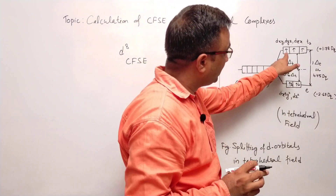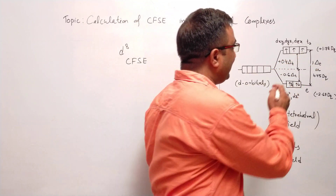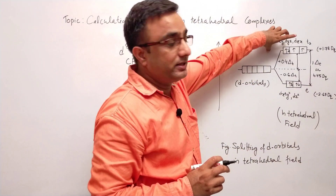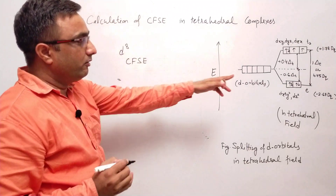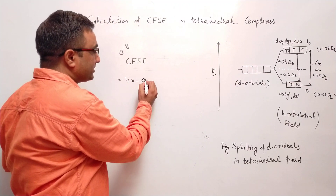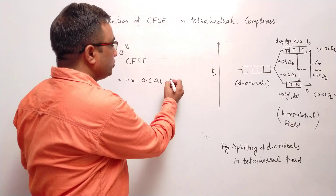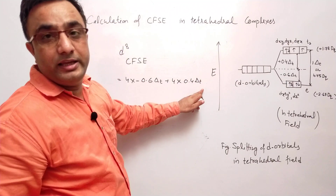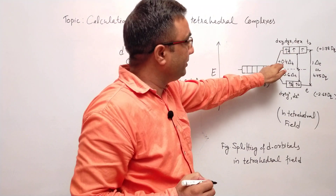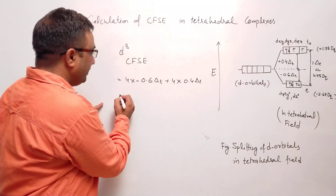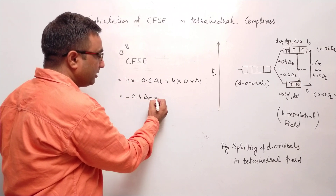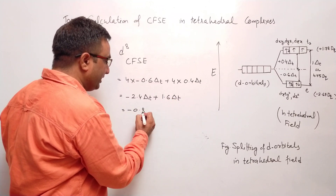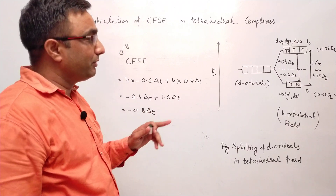For D8: in the system, the ninth electron goes to the higher energy level, occupying one of the orbitals of the T2 set. Net CFSE will be: 4 electrons in the lower energy level — 4 × (−0.6 delta T) — plus 4 electrons in the higher energy level — 4 × (+0.4 delta T). The destabilization factor for those electrons is +0.4 delta T. This gives −2.4 delta T + 1.6 delta T = minus 0.8 delta T. This is the CFSE for D8 tetrahedral complex.